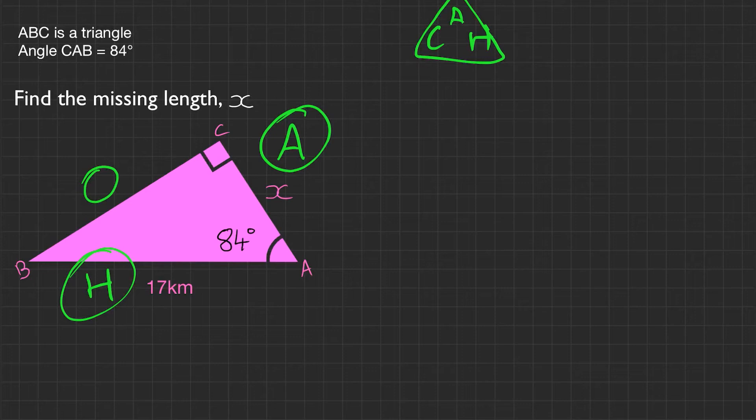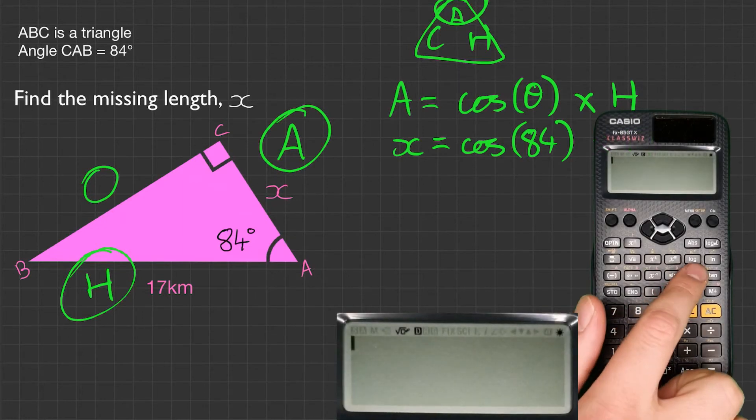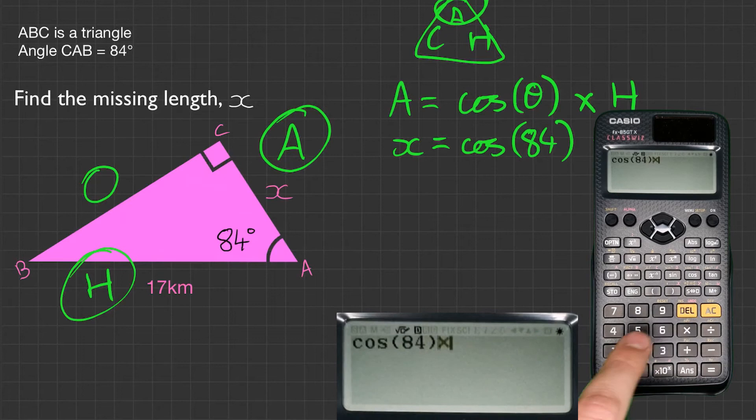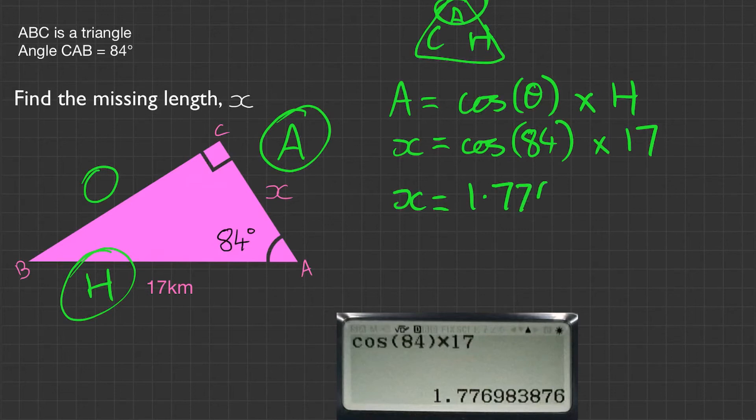We now need to work it out. But before we work it out, we need an equation. We need to find the adjacent here, so we'll put adjacent equals cos of the angle multiplied by the hypotenuse. We'll substitute in the values now. A is x, the angle is 84, multiplied by the hypotenuse which is 17. And we get a value of 1.7769838.